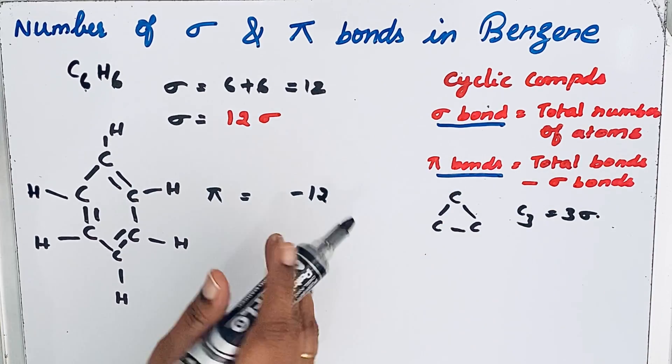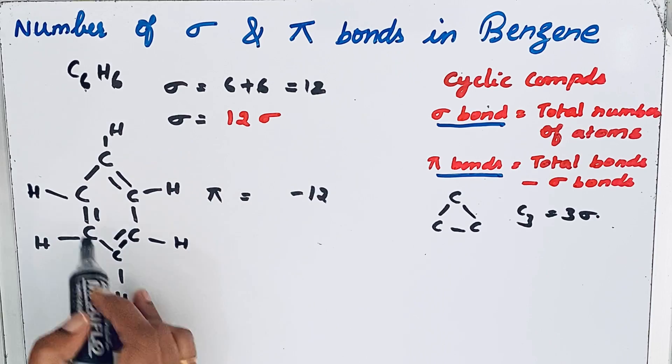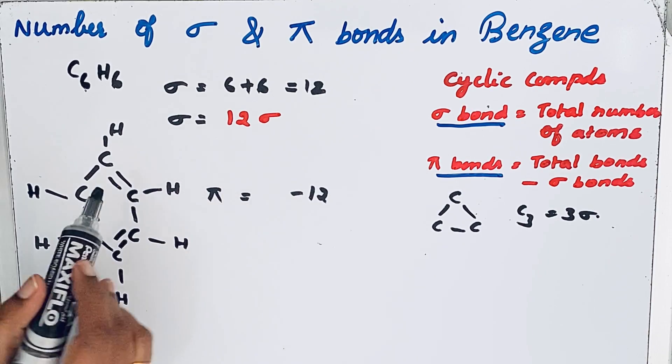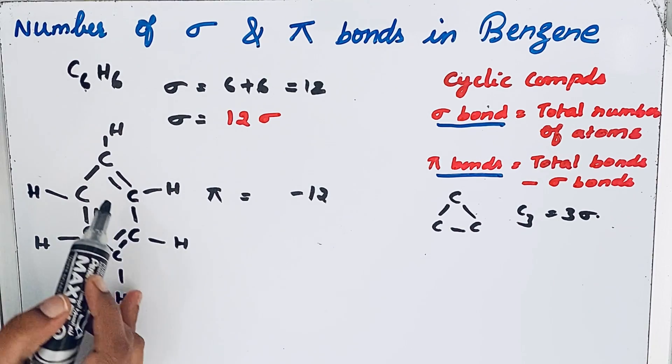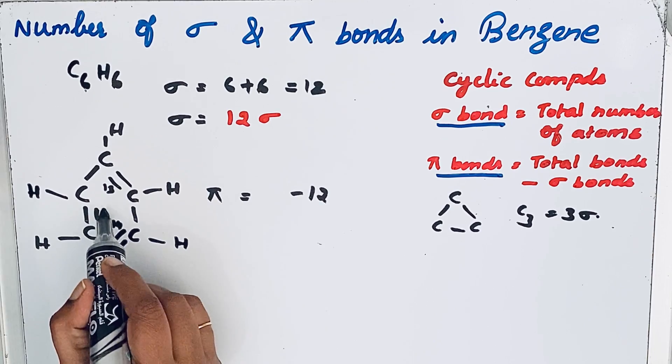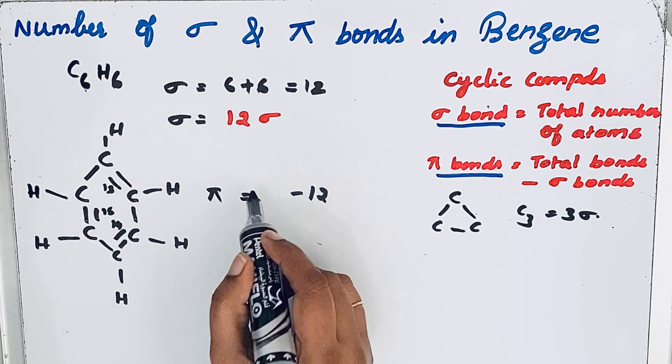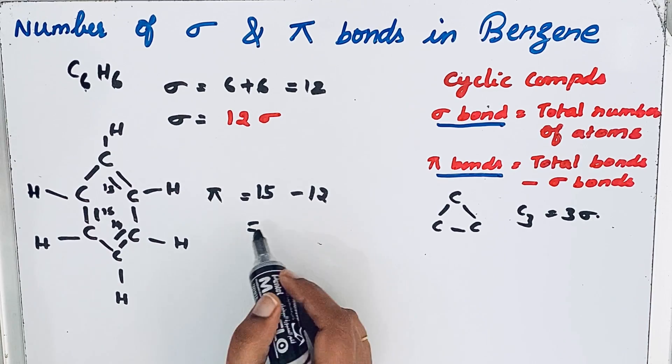To find the total number of bonds, we can add 12 - we already have 12 sigma bonds. We can add wherever two bonds are there. 12, this one is 13, then 14, then 15. Total 15 bonds are present. 15 minus 12 equals 3.